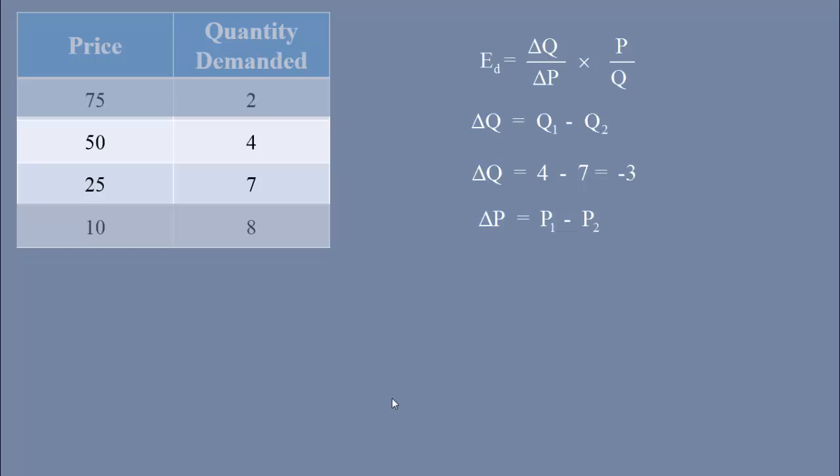The initial price is 50 rupees. The new price is 25 rupees. The change in price, that is delta P, is 50 minus 25 equal to 25.